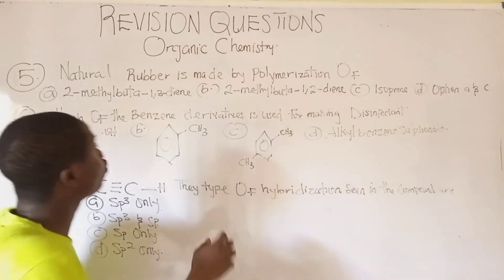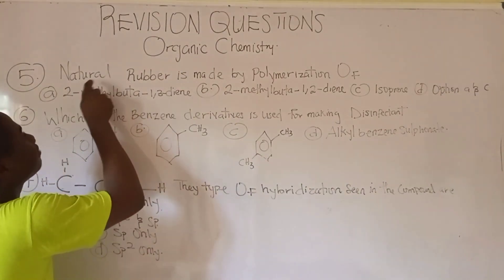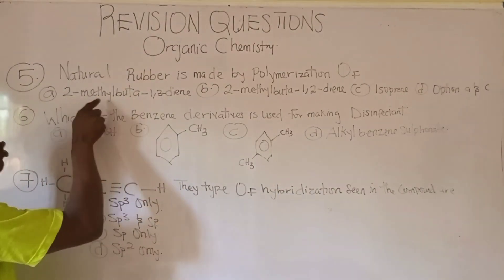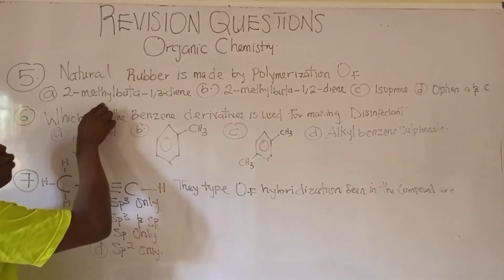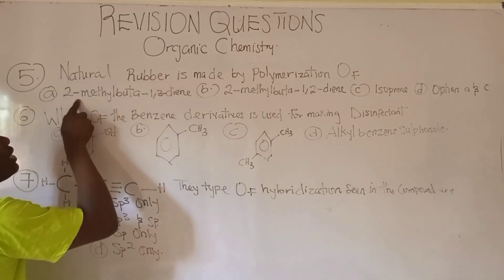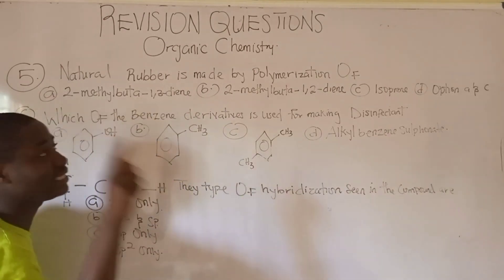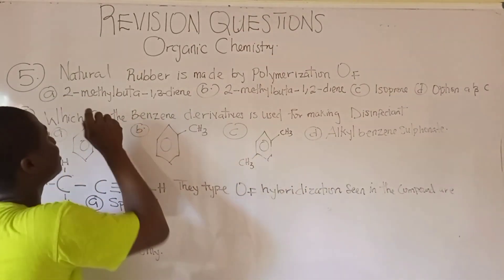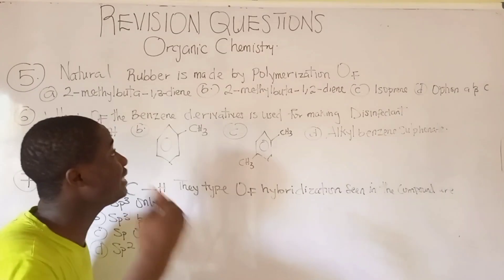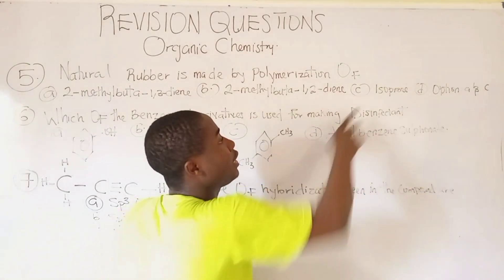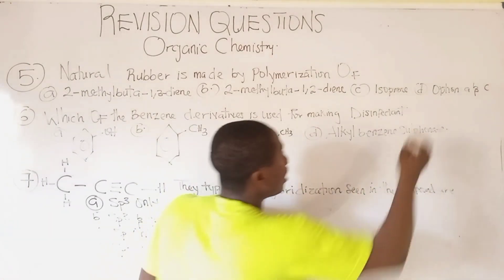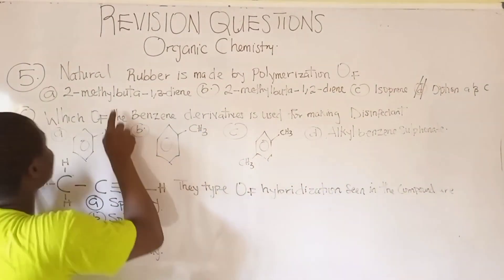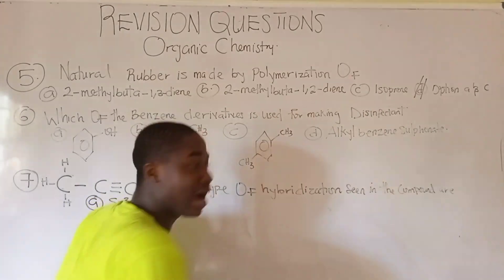For artificial rubber, the monomer unit is also 2-methylbuta-1,3-diene, also called isoprene. So the answer is option D, because option D says option A and C are both correct.